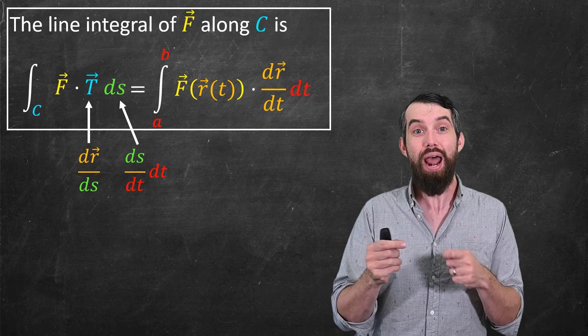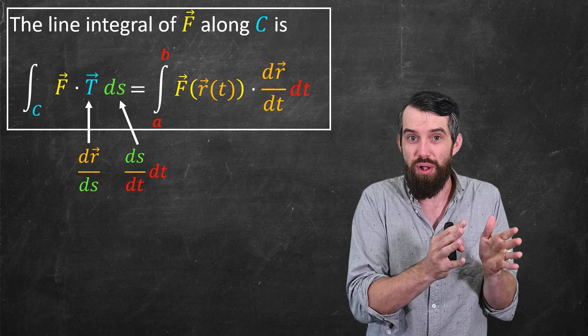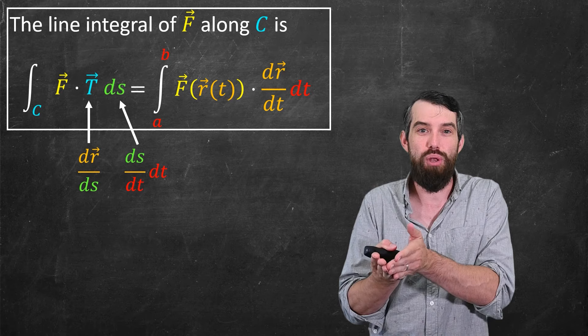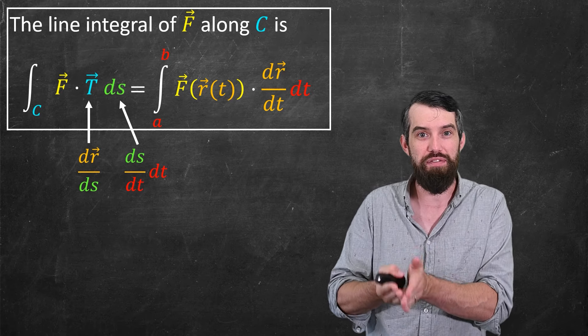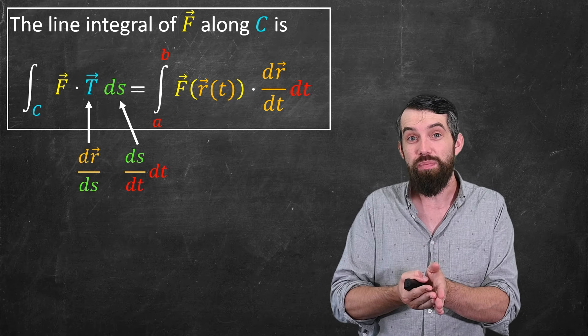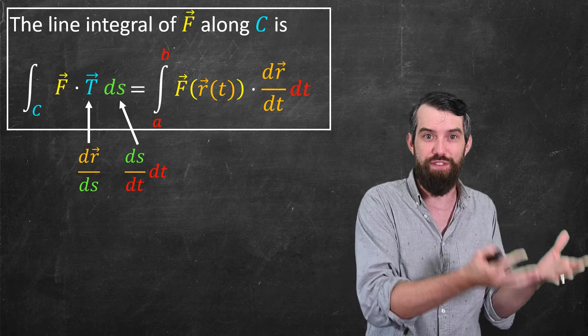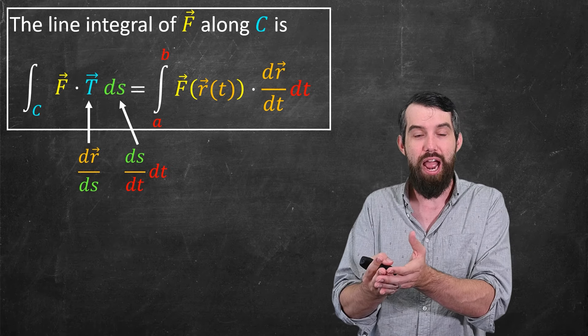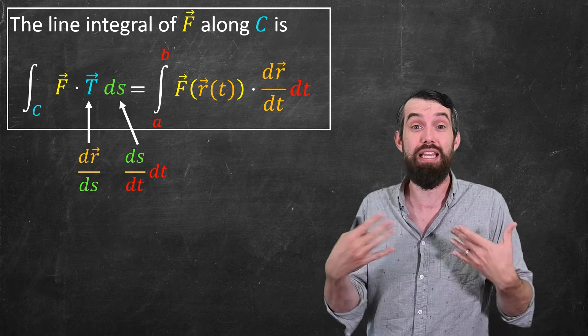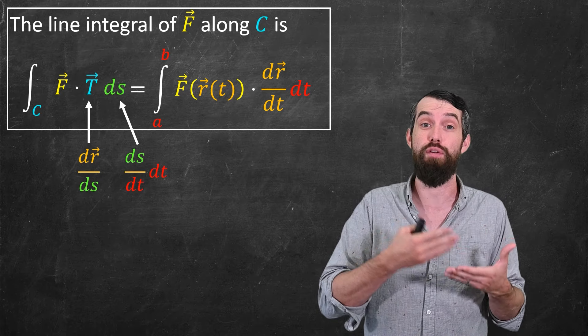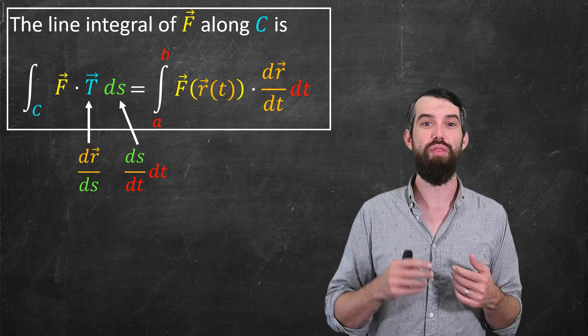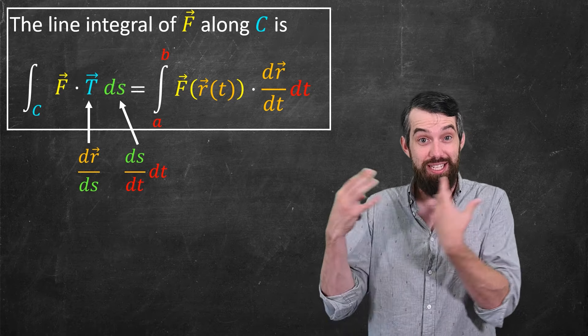And as a result, I can plug this in, and what I get is the field just evaluated now along the curve. So f of r of t. And then I multiply it by the derivative dr/dt. That's a dot product between this field and this derivative. And then all integrated out with respect to t and my limits of integration are in t as well. They go from the a up to the b.